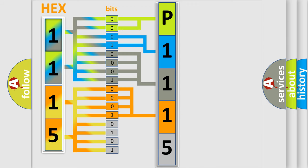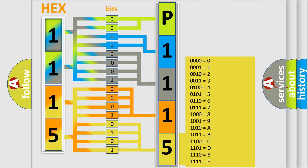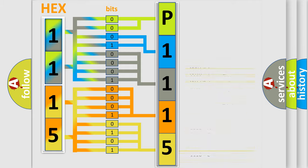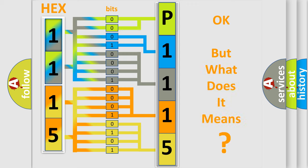A single byte conceals 256 possible combinations. We now know in what way the diagnostic tool translates the received information into a more comprehensible format. The number itself does not make sense to us if we cannot assign information about what it actually expresses.